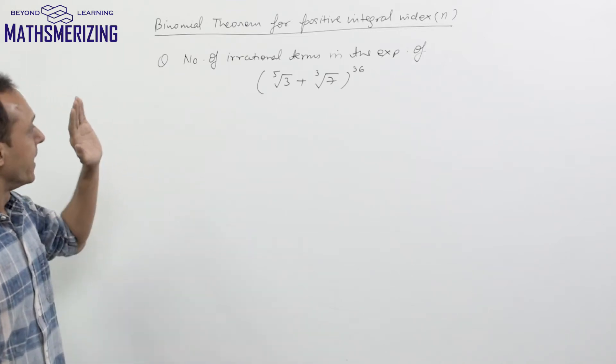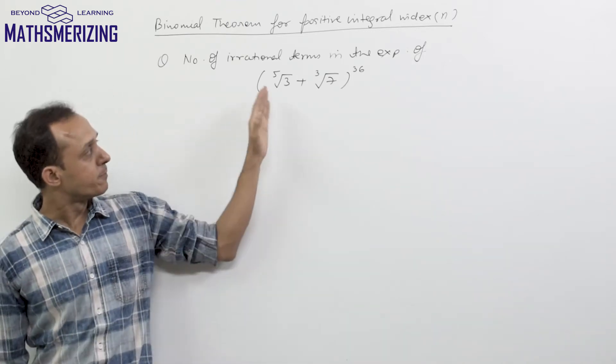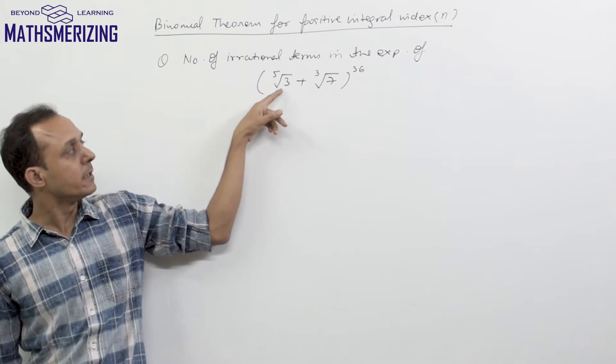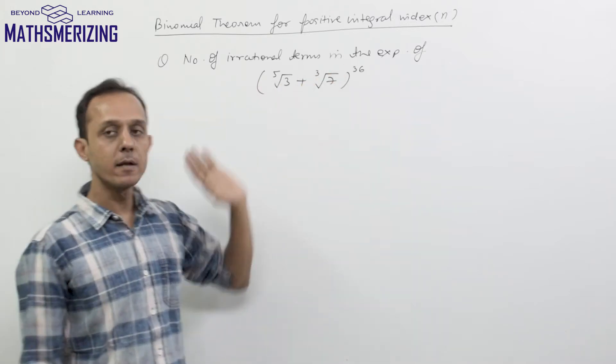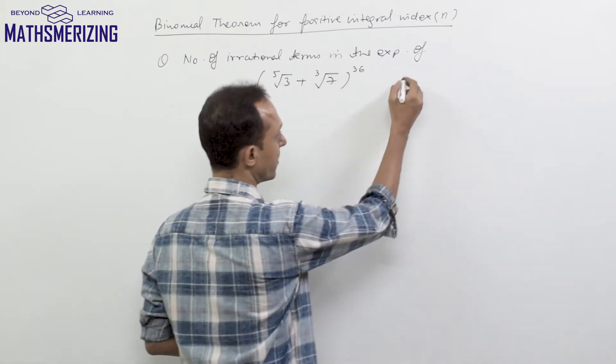Let us take another question which is find the number of irrational terms in the expansion of fifth root of 3 plus cube root of 7 to the power 36. Now here total number of terms